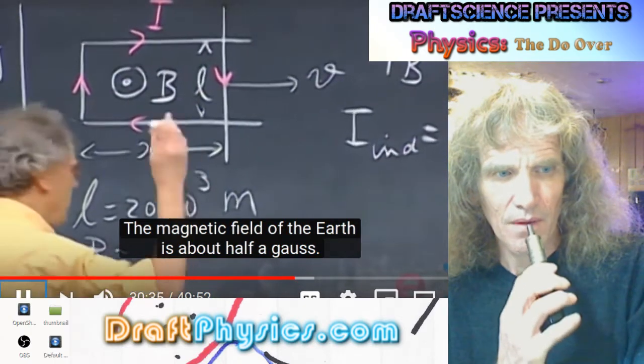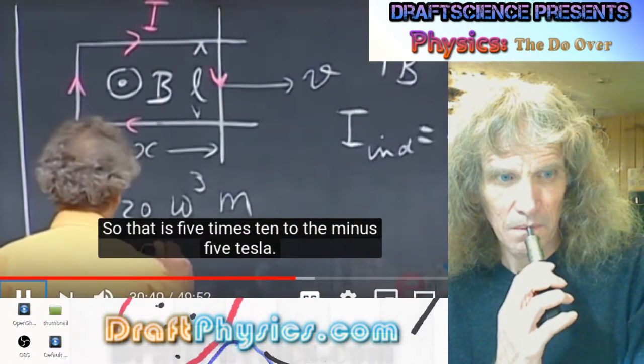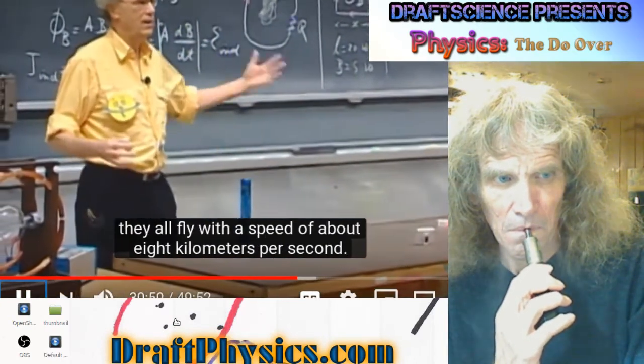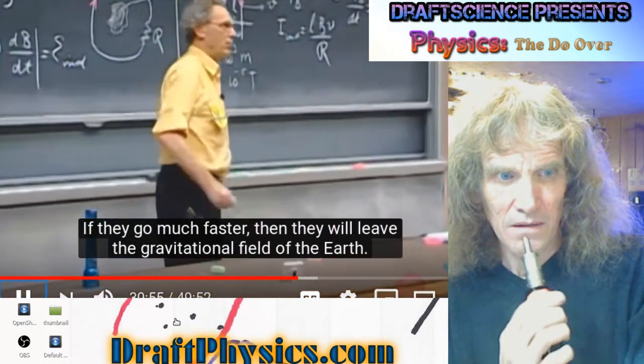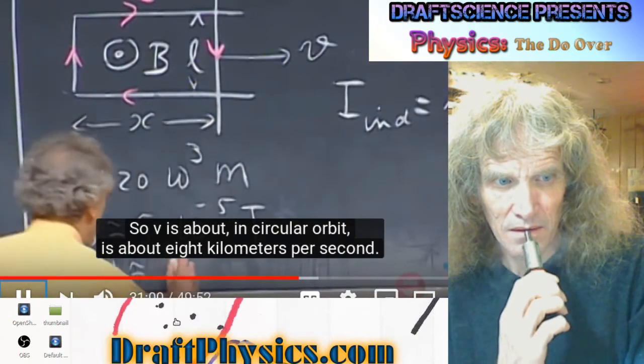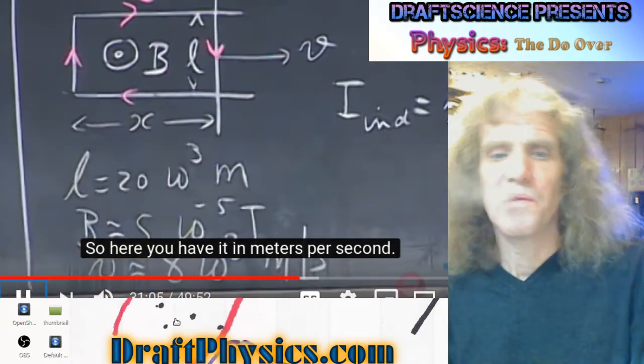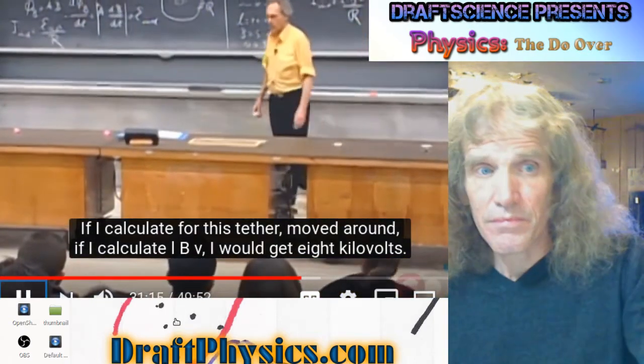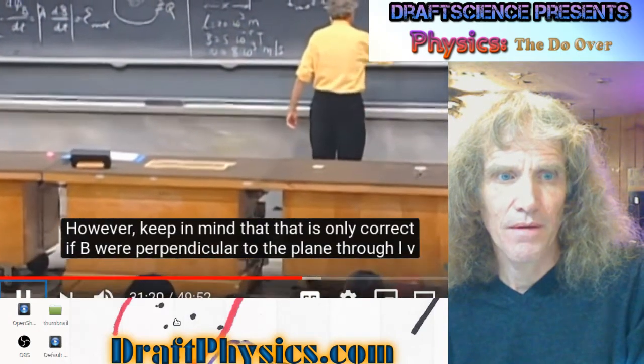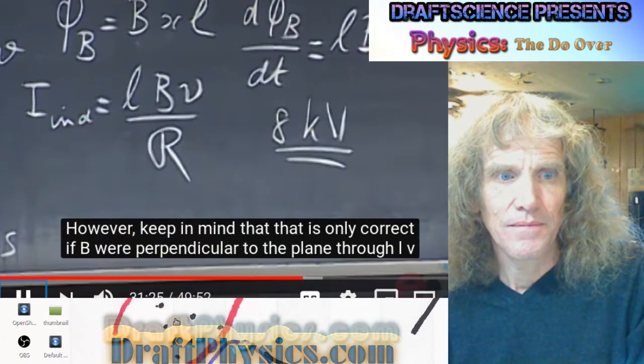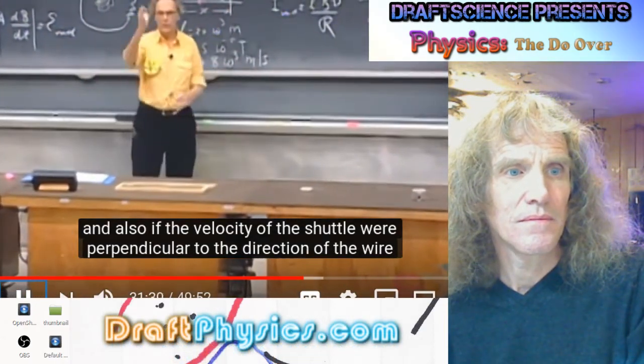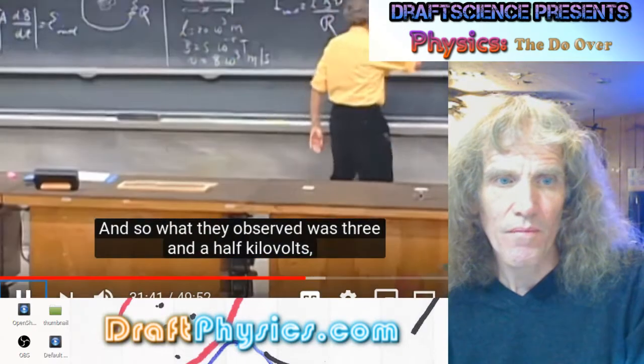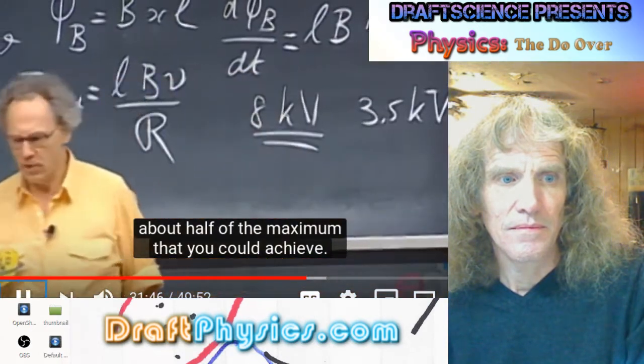The field of the earth is about half a gauss, even at a distance of 200 miles. So it is 5 times 10 to the minus 5 Tesla. And the shuttle, like any near-earth satellites, they all fly with a speed of about 8 kilometers per second. If I calculate for this tether LBV, I would get 8 kilovolts. However, keep in mind that is only correct if V were perpendicular to the plane through LV. What they observed was 3.5 kilovolts, about half of the maximum that you could achieve.